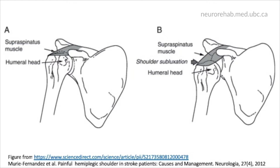This typically causes pain due to the strain on the shoulder structures, as well as potential impingement, which I will discuss in a moment. People who have shoulder spasticity due to their stroke have higher risk of pain because spasticity results in muscle imbalances and altered movements of the shoulder.